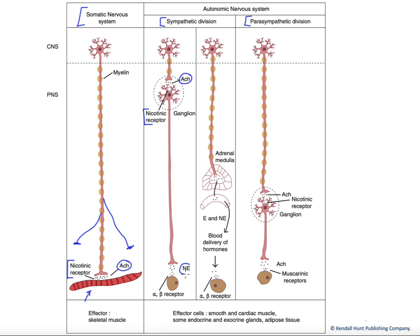These fibers release norepinephrine onto alpha and beta receptors at their effector tissues. Effector tissues of visceral control would be cardiac muscle, smooth muscle, and glandular tissue. In addition to this completely neuronal component, the sympathetic division also has a hormonal component where the preganglionic fiber innervates the adrenal medulla. The adrenal medulla releases the hormones epinephrine and norepinephrine — largely epinephrine — and it can then travel via the bloodstream to a whole host of target cells expressing alpha and beta adrenergic receptors.